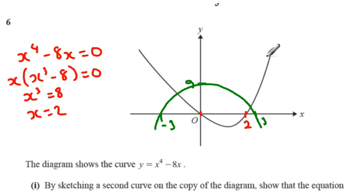And then from there, we can see that we do have two points of intersection. We've got a point of intersection there and a point of intersection there.